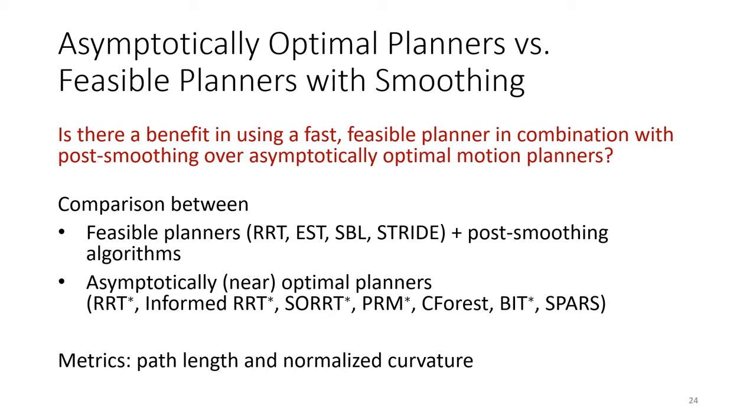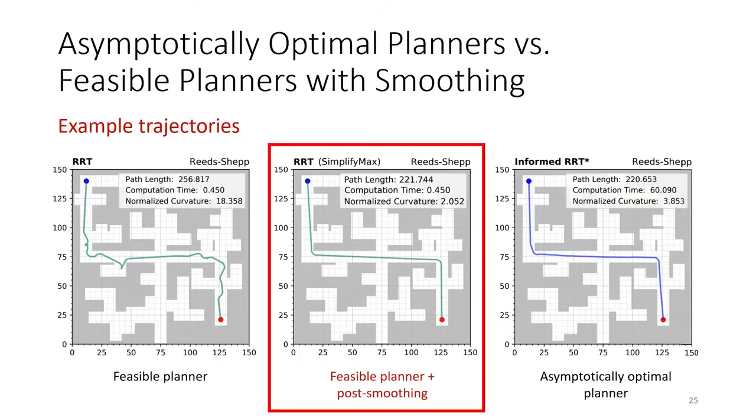In these figures, we can see that feasible motion planning with post-smoothing can indeed outperform asymptotically near-optimal motion planning algorithms in both planning efficiency and the resulting path quality.